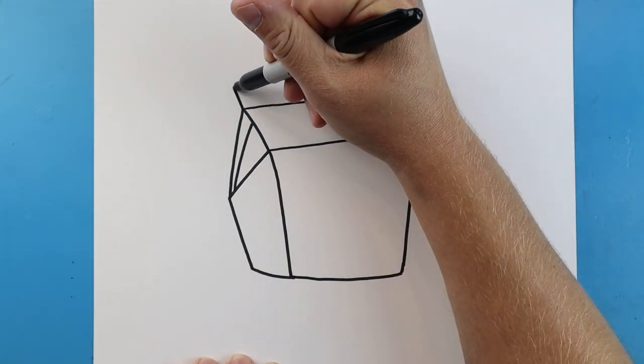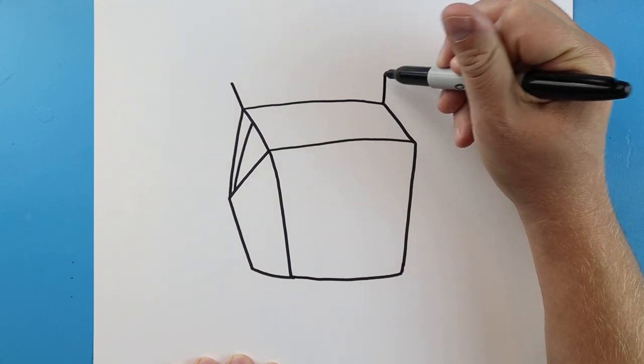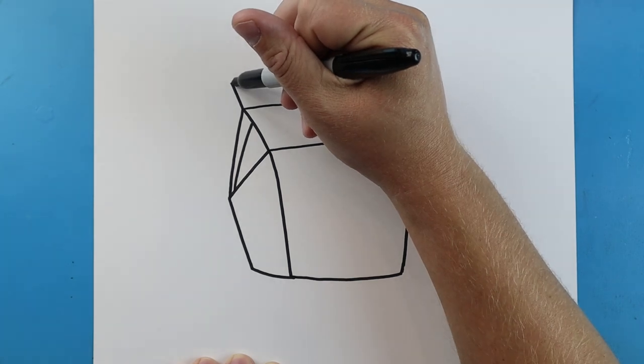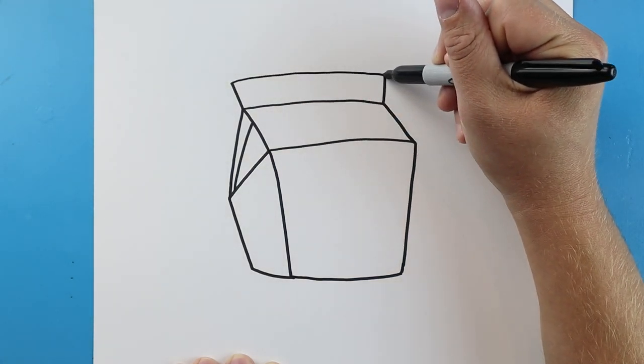Next, make a line that goes up and a line that goes up here for the top of the carton. Connect it with a line right there.